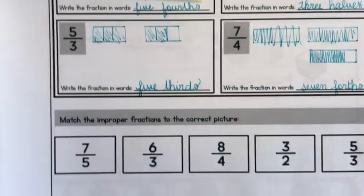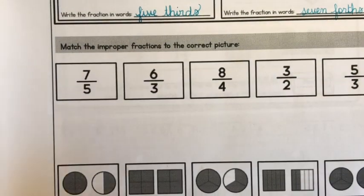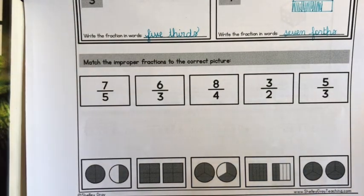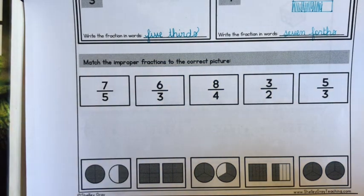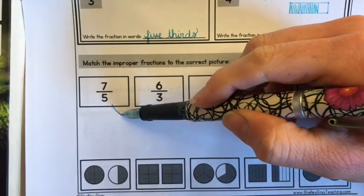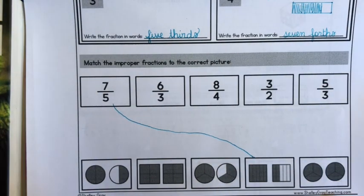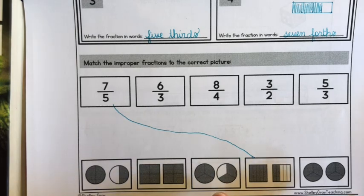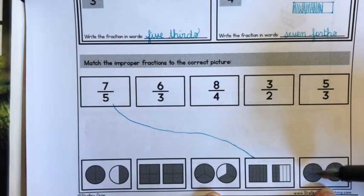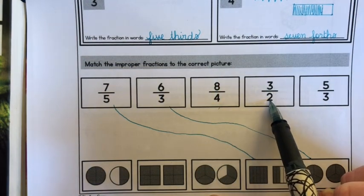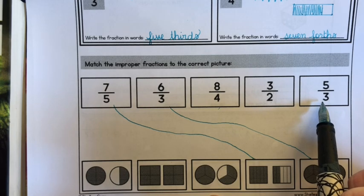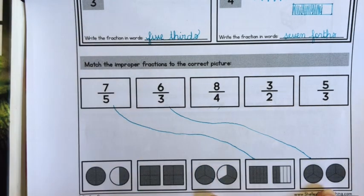Now, it says match the improper fractions to the correct picture. I'm going to do a couple of these with you. And then I would like you to do the rest. Remember, you can do just this part right on class notebook if you'd like. And I can see what you're doing. So you're just joining the improper fractions to the correct picture. So seven fifths. So we have to figure out which one of the objects is broken into fifths. One, two, three, four, five. This is broken into fifths. And I can count five, six, seven. Seven fifths. So I would draw a line to join the two together. My next one is six thirds. So I want to look for one that's split into thirds. And there's two here. This is thirds and this is thirds. But this one has one, two, three, four, five, six. So this one would be that one. Now, I'd like you to try eight fourths, three halves, and five thirds. I would like you to find those in the pictures. That is the part you're doing on your own today.